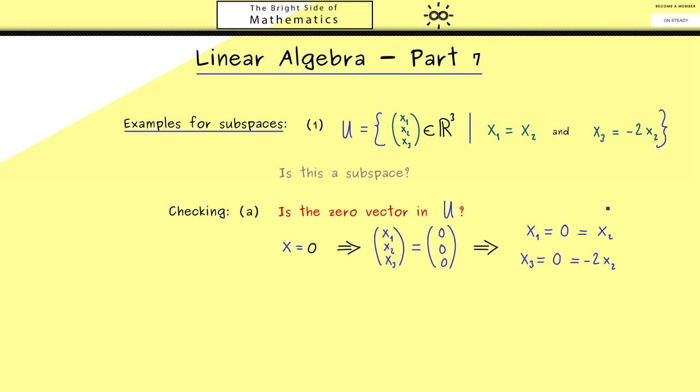So the second equation is also fulfilled. Therefore, the zero vector is in U. This is the important conclusion here. The first condition is checked, and of course, this is always the simplest one to check, and that's the reason we start with it.